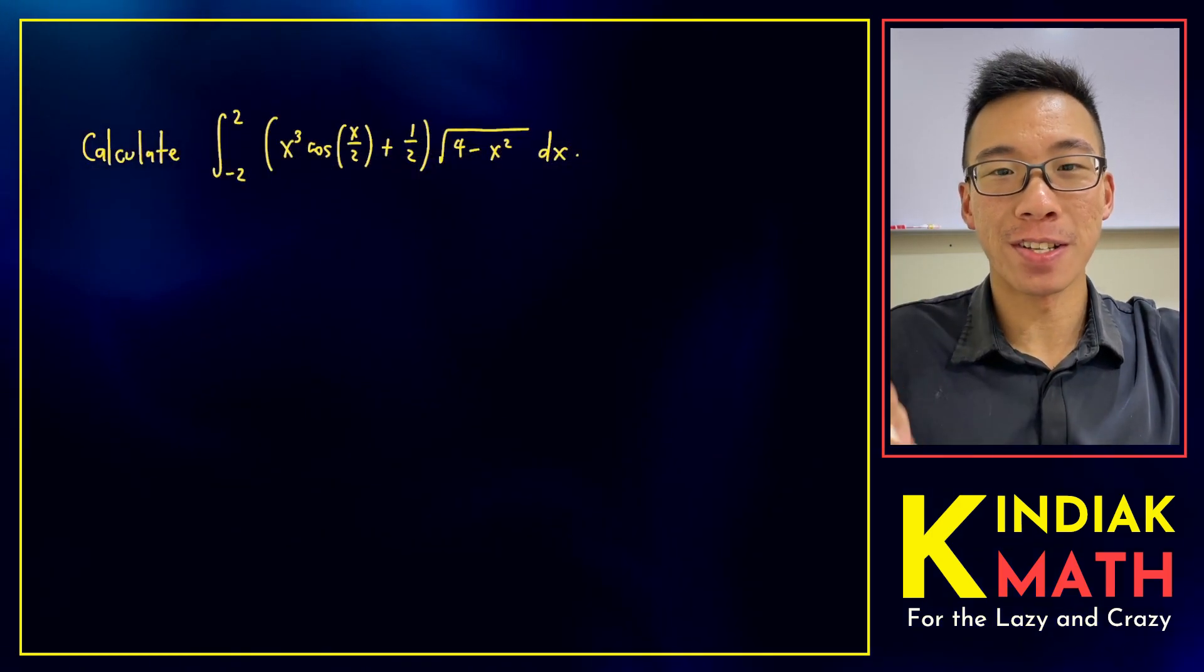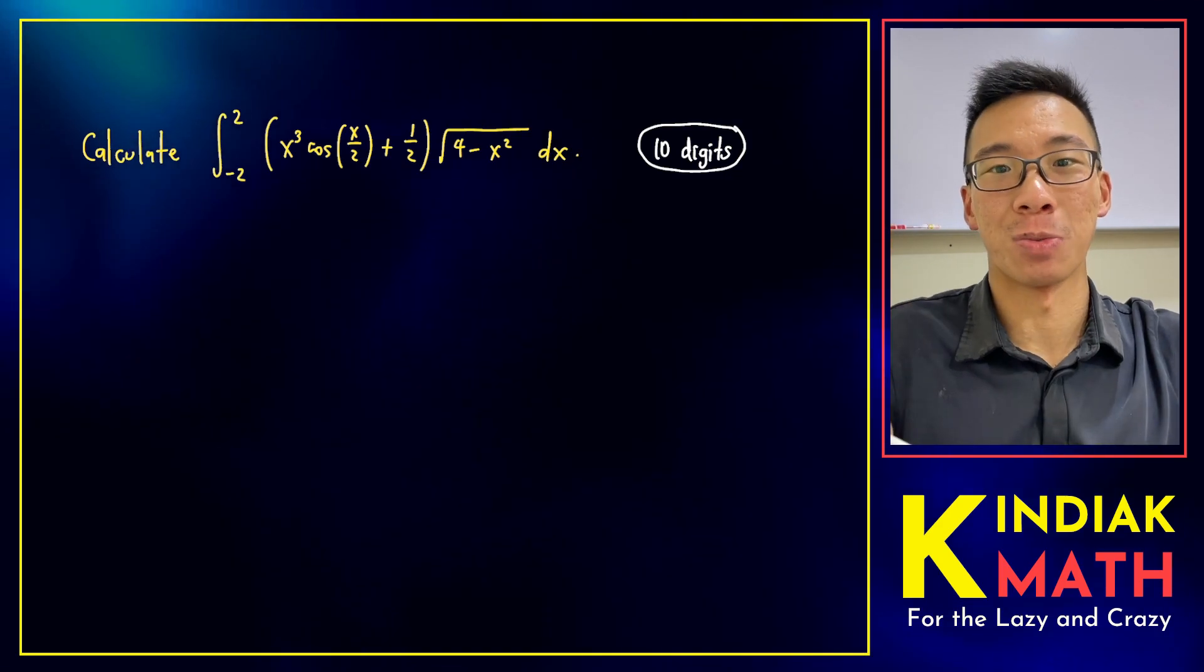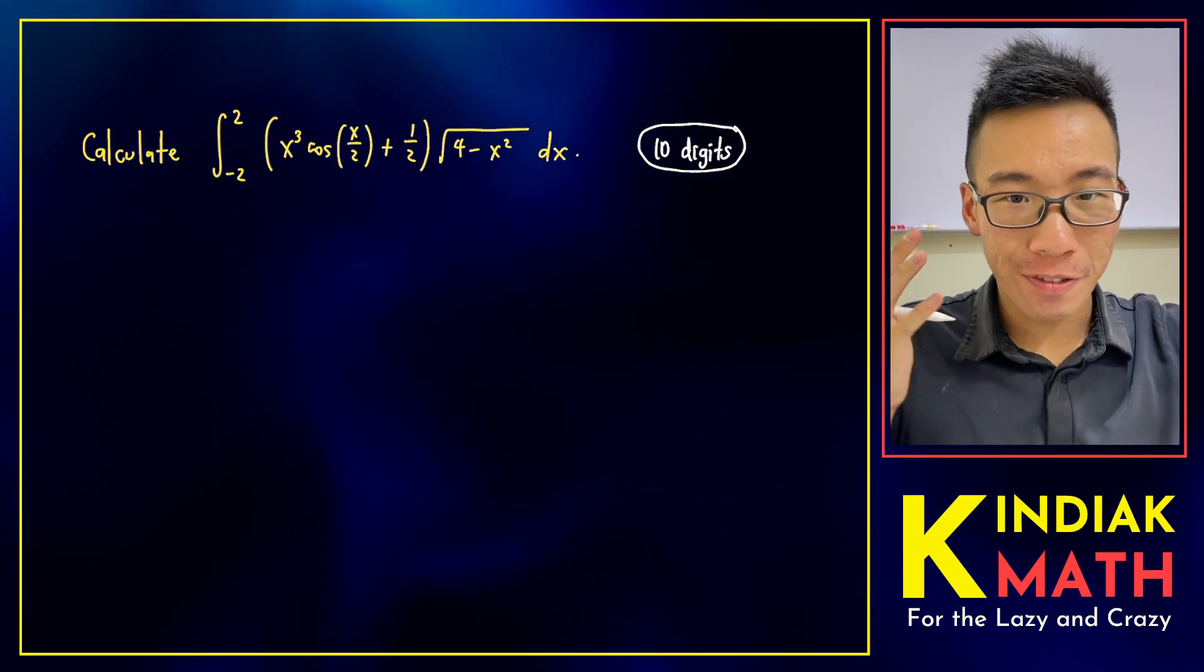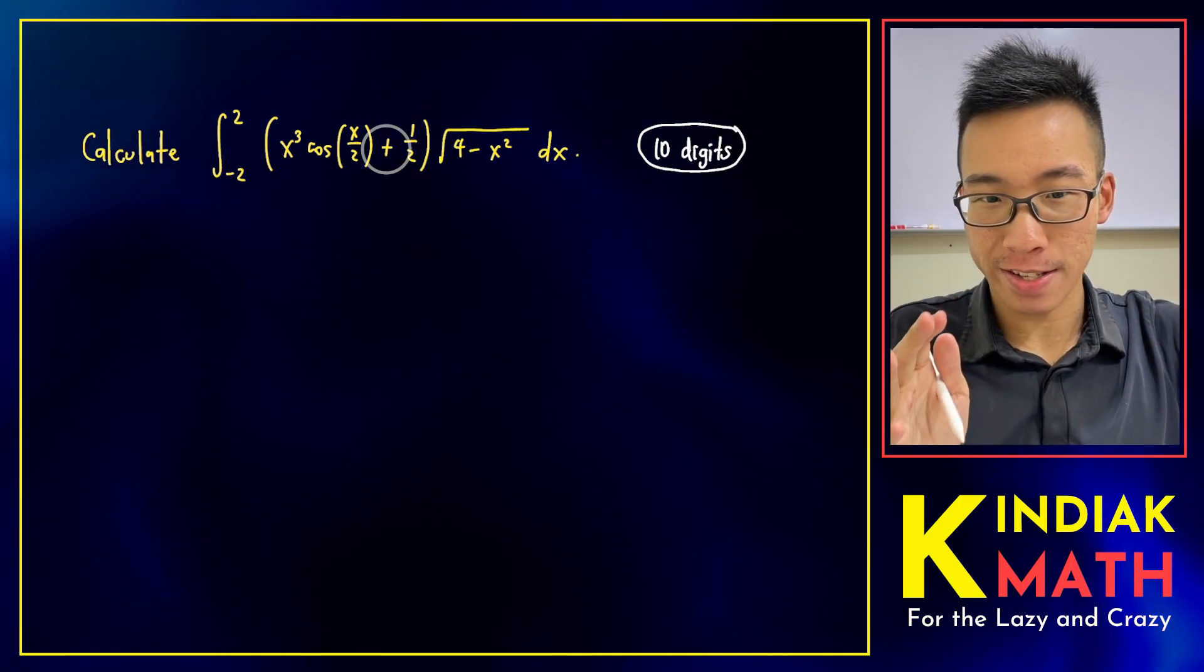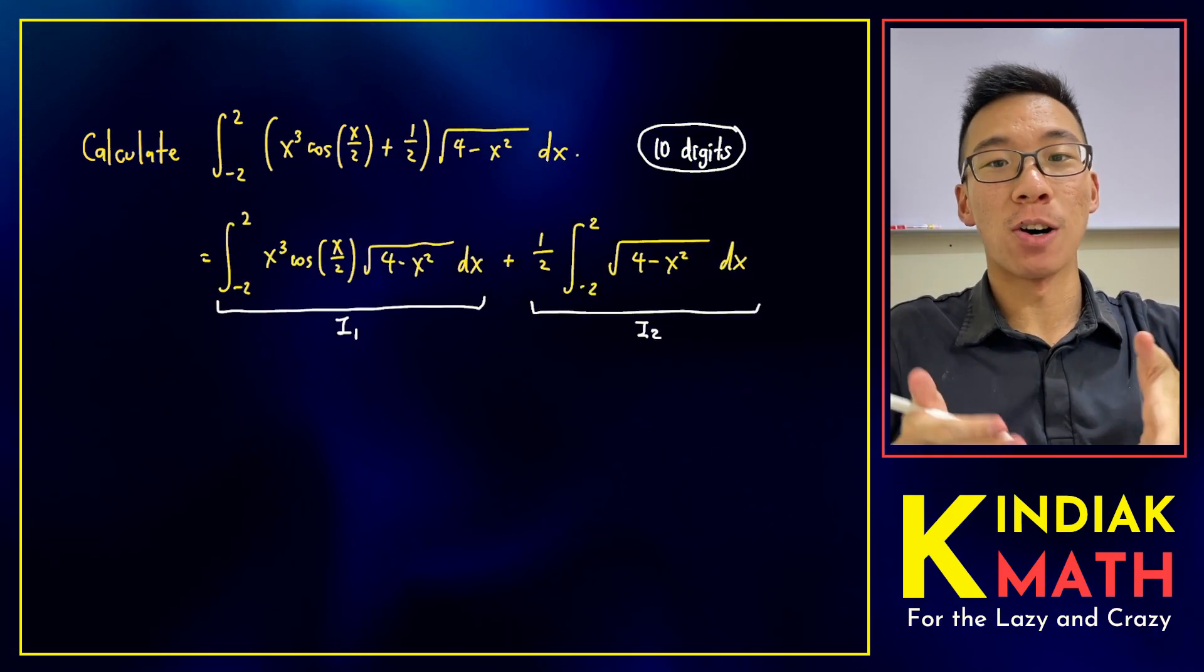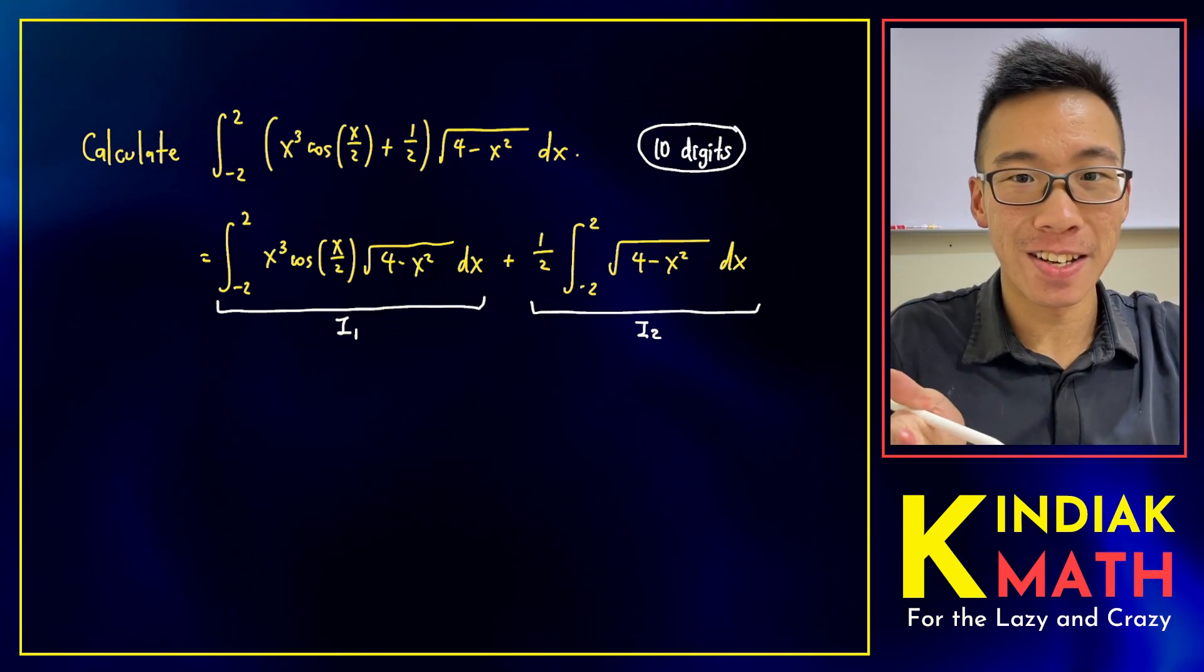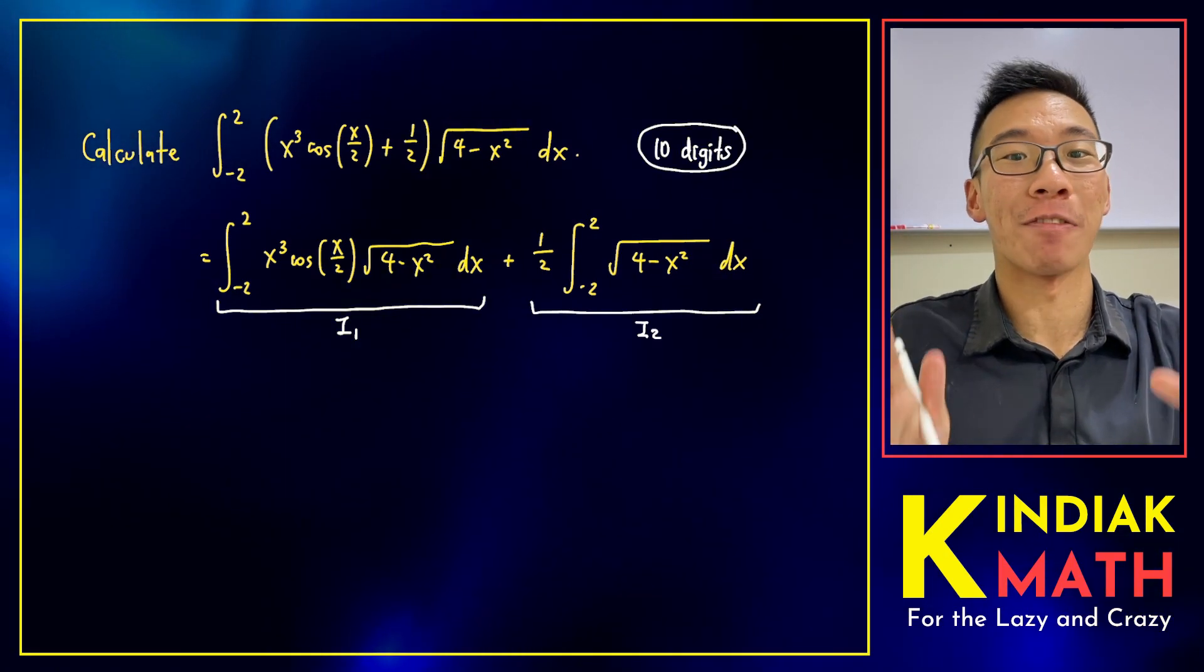We need to obtain the first 10 digits in order to get our WiFi password. The first question is how should we even start? Well, the first observation we have is that plus sign. It looks kind of sus. Perhaps we could split the integral into two separate integrals, and if we solved each integral, we can obtain our answer and get our WiFi password.